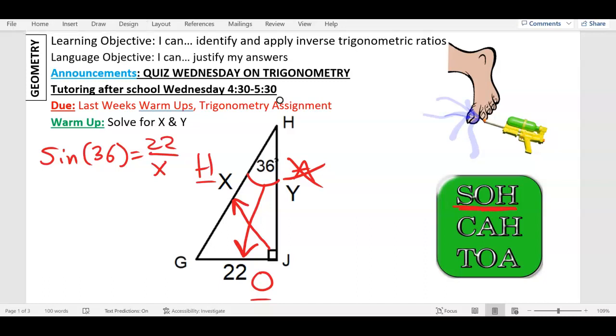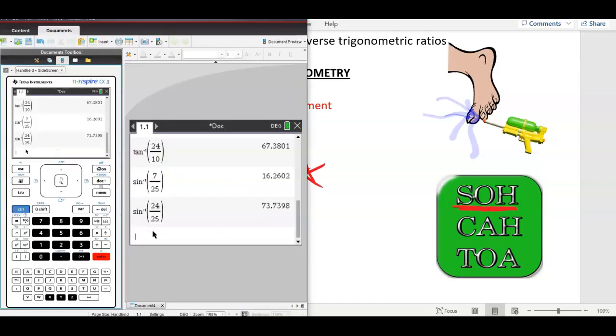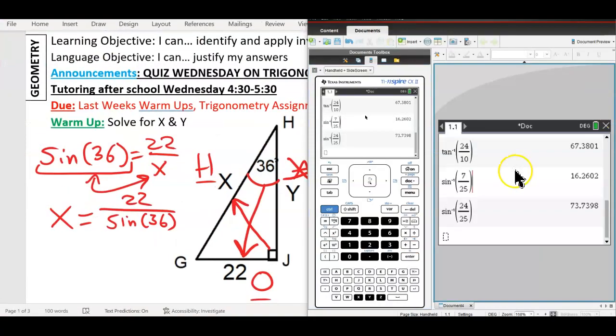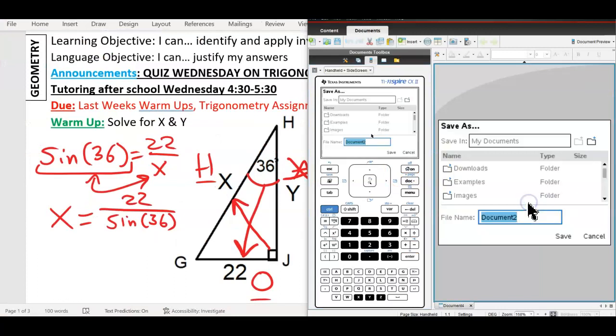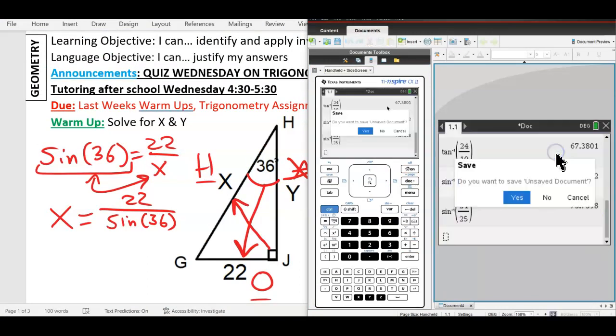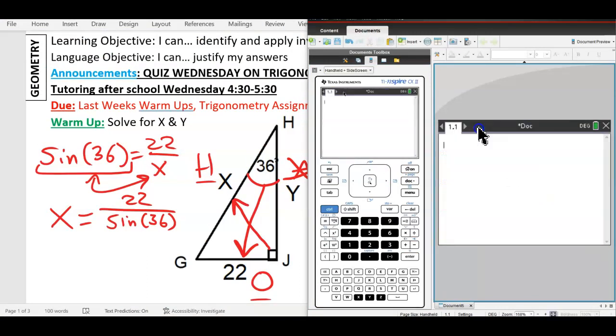Do y'all remember the trick to solve for X here? We switch it with sine 36 and X. Those are going to switch places. So X equals 22 on top, sine 36 on the bottom. And we can use that to find our answer. So let's go to our calculator. We'll do a new document. Don't save.